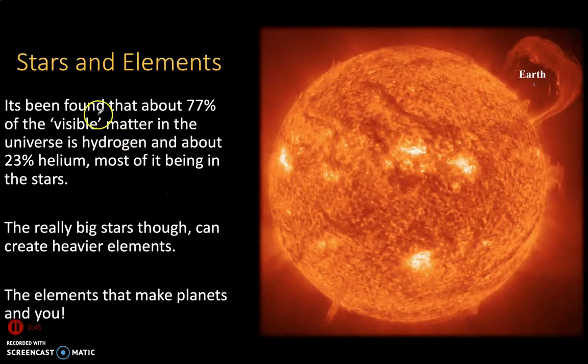Stars and elements. It's been found that about 77% of the visible matter in the universe is hydrogen. And hydrogen, if you think back to our atoms, is just an atom with one proton. An atom with one proton we consider to be the element of hydrogen. And about 23% helium, which is an atom with two protons, most of it being in the stars.